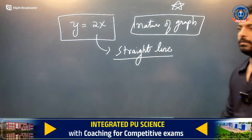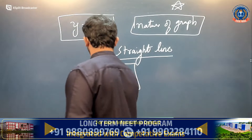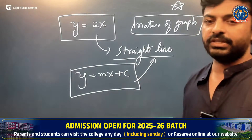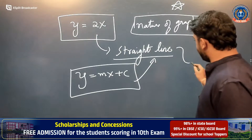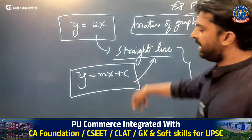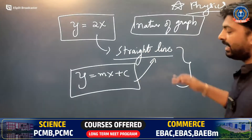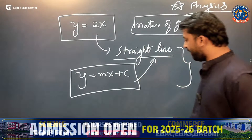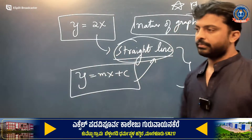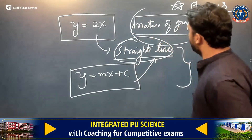Why is it a straight line? Because this is in the form of y is equal to mx plus c, which is the equation for a straight line. This is mathematics, but it is required for physics. So first, we shall revise this. The equation of a straight line is y is equal to mx plus c. The given equation is in the form of y equals mx plus c, so the nature of the graph is a straight line.